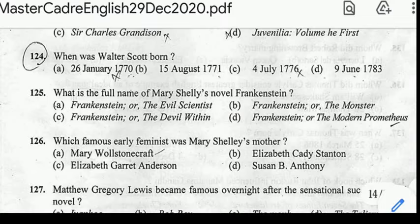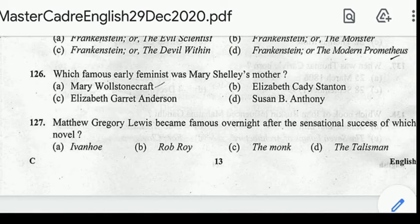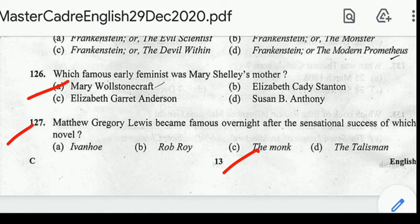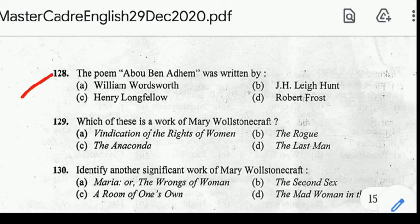Number 126: which famous early feminist was Mary Shelley's mother? Correct answer: option E, Mary Wollstonecraft. Number 127: Matthew Gregory Lewis became famous overnight after the sensational success of which novel? Correct answer: The Monk.